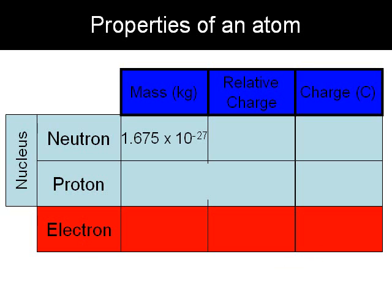The mass of a neutron is very small. The mass of a proton is similar to the mass of a neutron. An electron is about 2000 times smaller than the mass of both the neutron and proton.